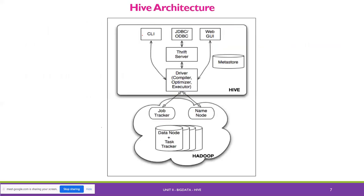This is the Hive architecture. This is the Hive part and this is the Hadoop part. As MapReduce gets involved, the job tracker, name node, data node, and task tracker are the jobs available in MapReduce. These works are carried out by HDFS through MapReduce, and the outline of Hive architecture includes CLI, JDBC, ODBC, Thrift server, and compiler, executor, and optimizer.